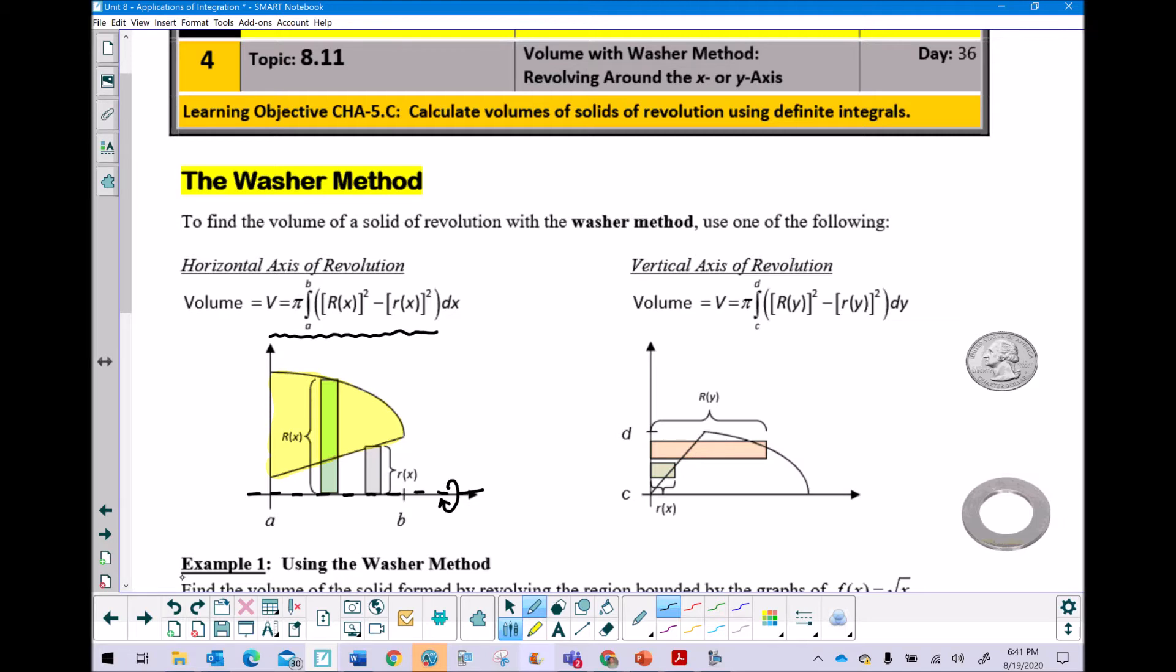And now it starts to maybe come together as you see that if you use this capital R of x as your initial radius and revolve that piece around the x-axis, you're going to be including some volume or some space that you don't want included, namely this piece.